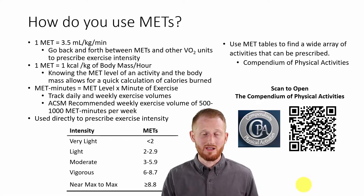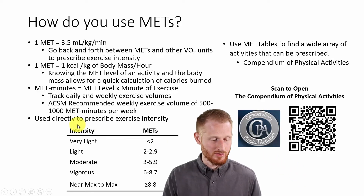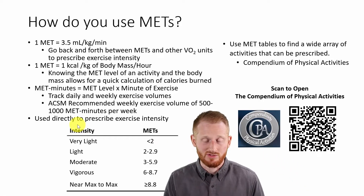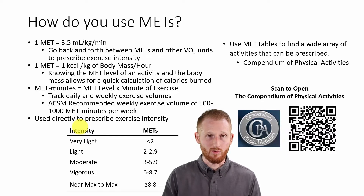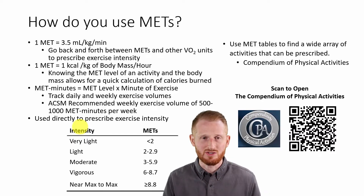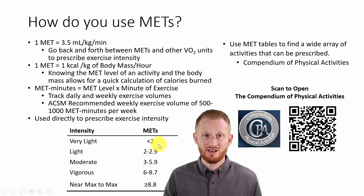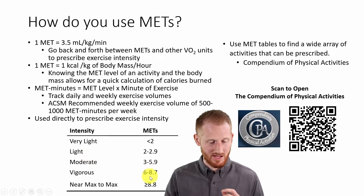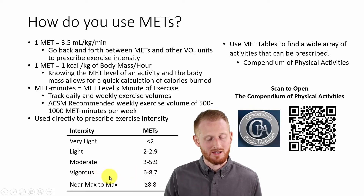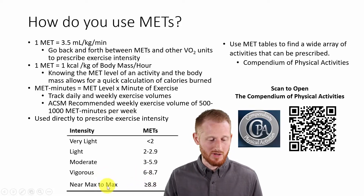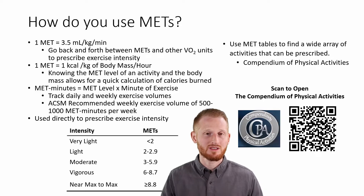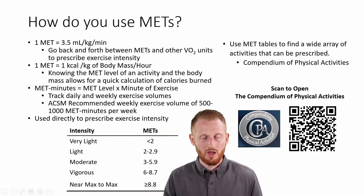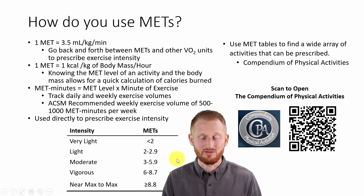The last major use of METs for the practitioner is to directly use it for exercise prescriptions. There are various tables out there for more specific populations, but for the general population, any activity less than 2 METs is very light; 2 to 2.9 would be light; 3 to 5.9 would be moderate intensity exercise; 6 to 8.7 would be vigorous intensity exercise; and 8.8 or higher would be near max or maximal exercise for most individuals. These are estimates, so they're not going to fit everybody perfectly, but this is a general rule for classifying exercise intensity from METs.